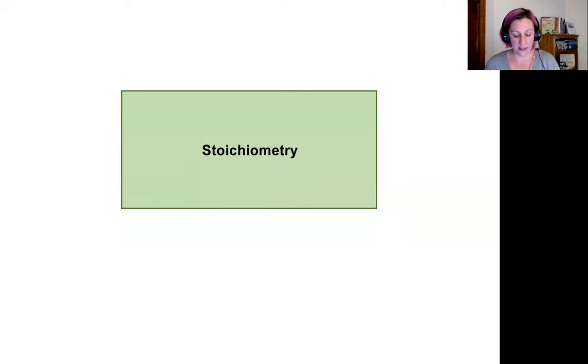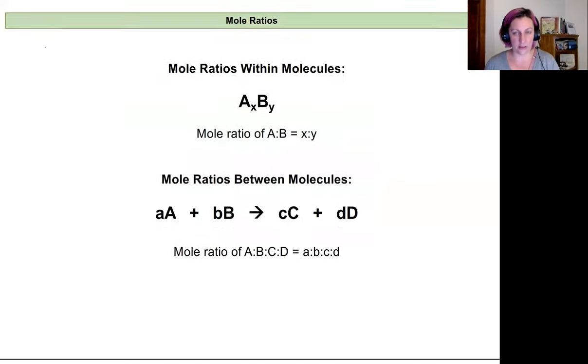The foundation of stoichiometry calculations is that they're basically dimensional analysis problems. You can convert between the amount of one chemical in a reaction and the amount of another chemical using mole ratios. So if I know the amount of moles of B I have, I can figure out the amount of moles of C I will produce.